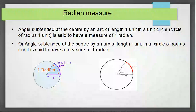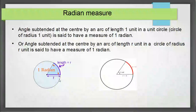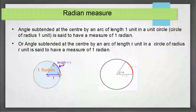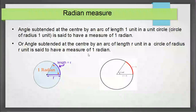In other words, if you take a circle of radius r units and take an arc length also equal to r units — for example, if the radius is 5 cm, you take the arc length equal to 5 cm — this arc will subtend a certain angle at the center, and that angle is defined as 1 radian. So the definition is: the angle subtended at the center by an arc of length r units in a circle of radius r units is said to have a measure of 1 radian.